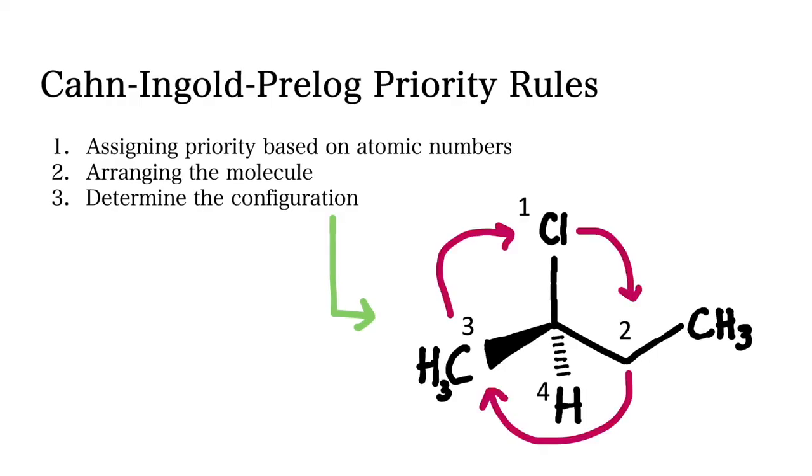Now observe that the order of the priority groups is such that chlorine comes first, ethyl comes second, and methyl comes third. We do not consider hydrogen because it's going into the page.